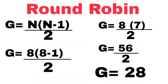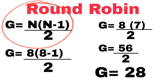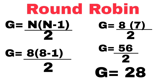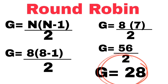To assign teams to games, we use the round robin formula to find how many games will be played. The formula is G = N times (N minus 1) divided by 2, where N is the number of teams or entries. Substituting N = 8: G = 8 times (8 minus 1) divided by 2, which is 8 times 7 divided by 2, giving us 56 divided by 2, which equals 28 games.